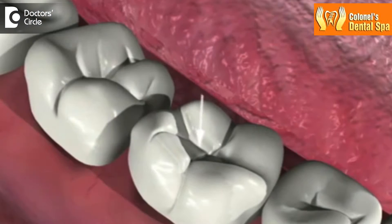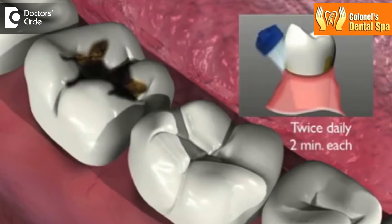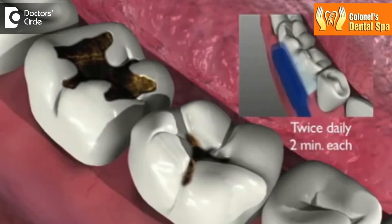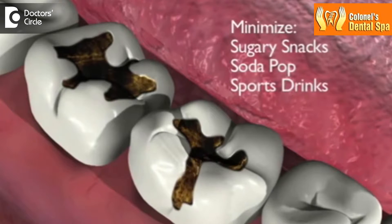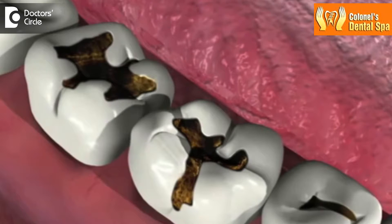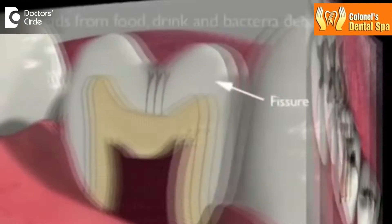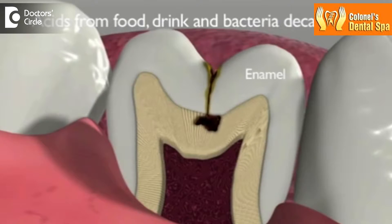The process of tooth decay starts when the food that we eat gets stuck between the surfaces of the teeth and between the fissures which are there on the tooth surface. The anatomy of the tooth is such that there is a high tendency of food to get stuck on the tooth surfaces, also because of the type of food that we eat nowadays, which is processed food.